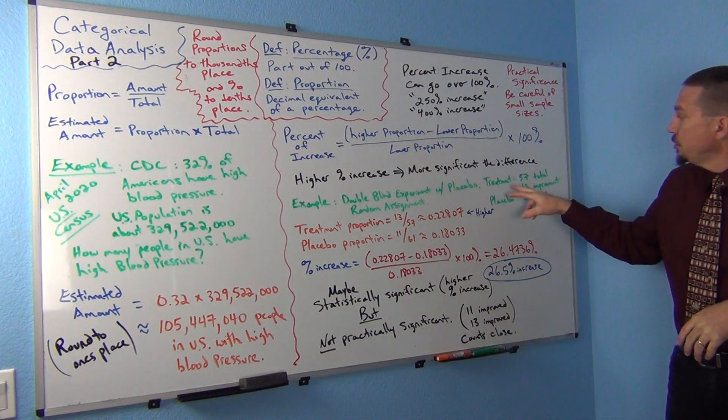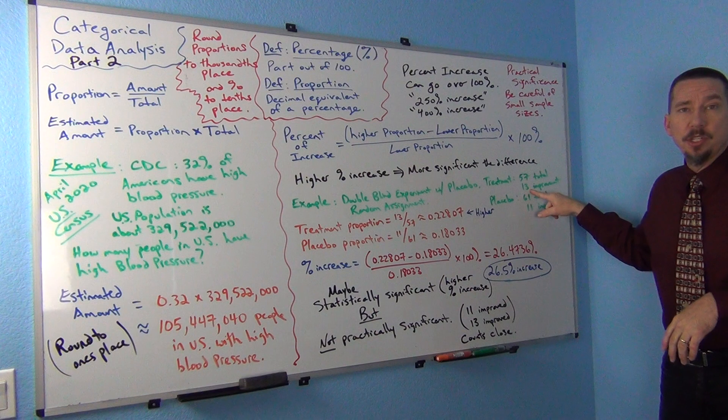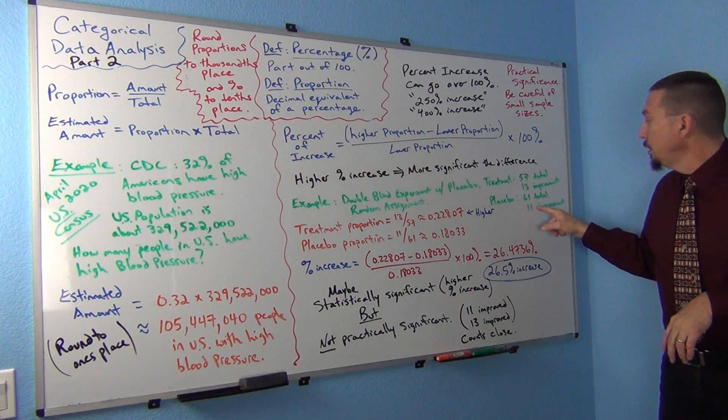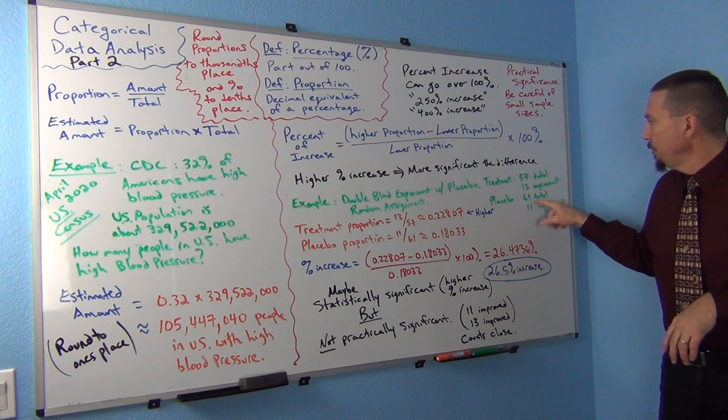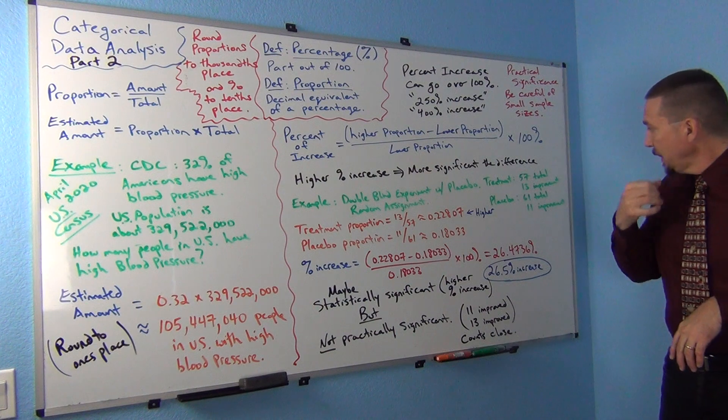And we're trying to see how many people got better. How many people showed improvement in their symptoms? All right. Well, it sees here that a treatment group we had 57 total and 13 of them showed improvement. The placebo group 61 total and 11 improvement. Remember these people were chosen randomly in terms of what group they were in.